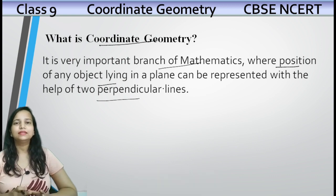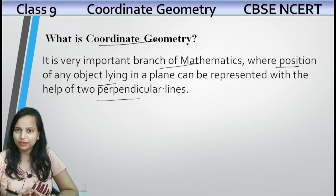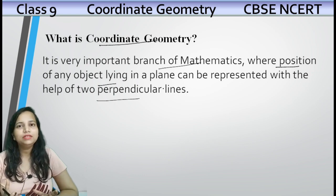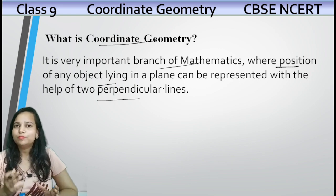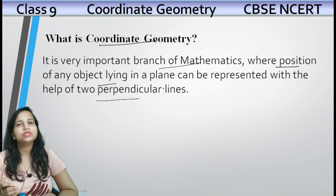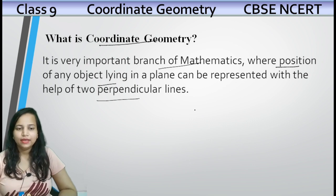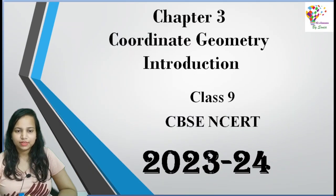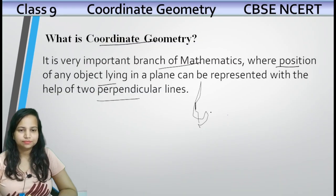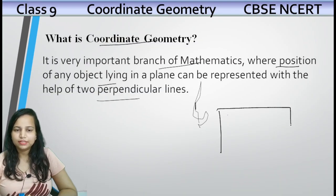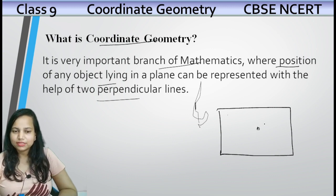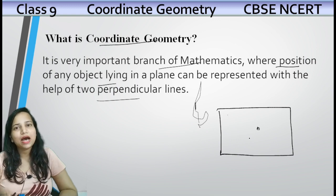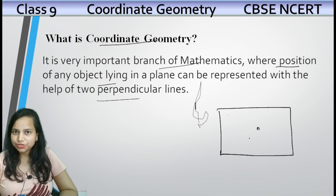Coordinate Geometry kya hai? Jiske andar hum kisi object ki ek plane ki andar — plane means two-dimensional hai — us plane ki andar kisi object ki position ko find out karna hai. Let's suppose this is a blackboard, and I have drawn a small circle. And if I asked you to find the position of this circle.